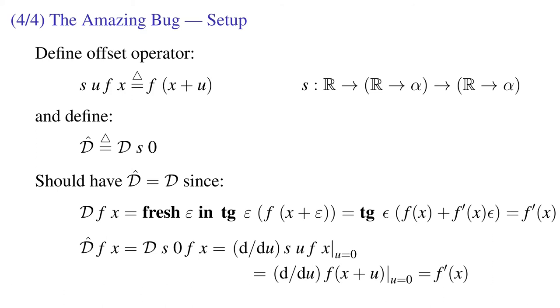So I'm going to define an offset operator s. It takes an offset u and a function f, and returns f offset by u. Now I'm going to define d-hat to be the derivative of s at the point 0. If we look at d of f at x, we expand things out, turn the crank, and we get f' of x.